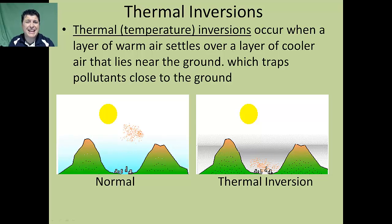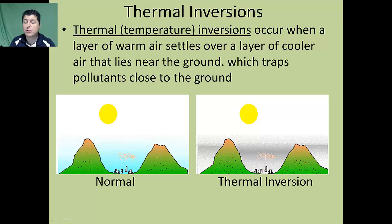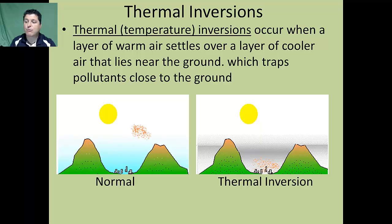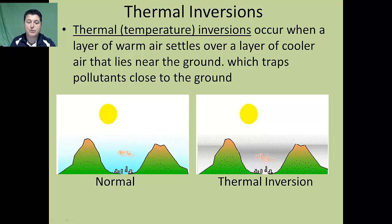One thing that can exacerbate the problem of air pollution is when a thermal inversion takes place. This occurs when a layer of warm air settles over a layer of cooler air that lies near the ground, trapping pollutants close to the ground. Normally, warm air rises and takes pollutants with it, allowing them to move with the wind. During a thermal inversion, pollutants are trapped near the ground and, as new pollutants are produced, we get an increasing concentration of pollutants.